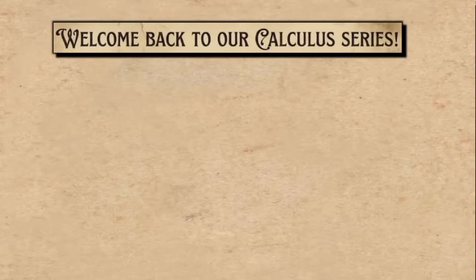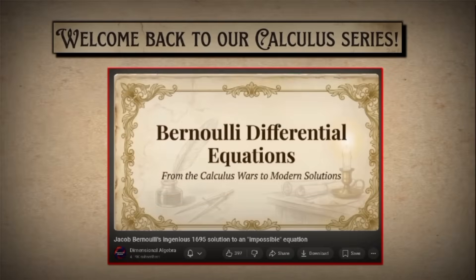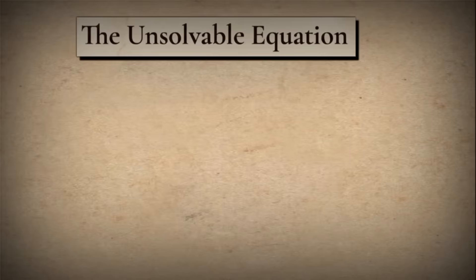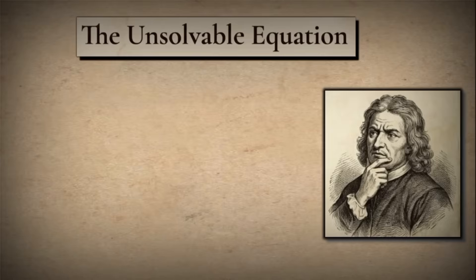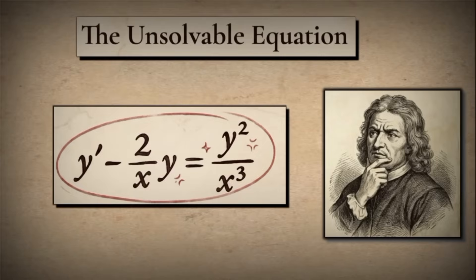Welcome back to our calculus series. In our previous video, we covered the foundations of differential equations and explored the method of separation of variables. Today, we're going to discuss the actual equation that Jacob Bernoulli encountered: y' minus 2/x times y equals y² over x³. This is the equation that truly resisted separation of variables and forced Bernoulli to develop an entirely new technique. His solution to this specific problem led to what we now call Bernoulli differential equations, a whole class of equations and methods that bear his name.